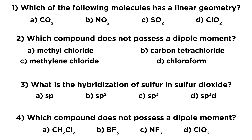The first question asks which of the following molecules has a linear geometry, with four options. The second asks which compound does not possess a dipole moment, with four options. The third asks what is the hybridization of sulfur in sulfur dioxide, with four different hybridizations. The fourth also asks which compound does not possess a dipole moment, but with four different options. So there's a lot here — geometry, hybridization, and polarity, which depends on geometry.